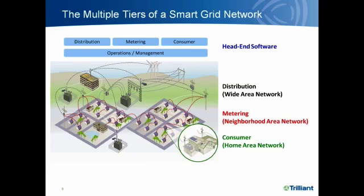This converged network with multiple organizations results in multiple distinct communication tiers. Consumer networking focuses on the Home Area Network, providing communications to devices like meters, in-home displays, thermostats, and direct load controls. The Neighborhood Area Network provides communication between meters to enable advanced metering applications. The distribution network is tied into the Wide Area Networking tier, providing long-range communications connecting substations and other distribution devices. All of this feeds back to the head-end software for the different organizations.